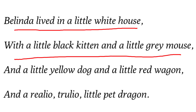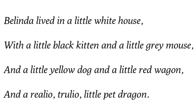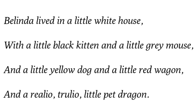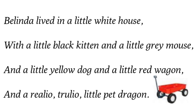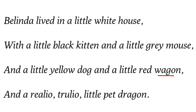The poem begins with a description of the setting. Belinda lived in a little white house. She had some pet animals — a little black kitten, a little grey mouse, a little yellow dog, and also a little dragon. There was also a wagon parked outside the house. So the poem opens with a description of this environment, and she also had a really or truly little pet dragon.